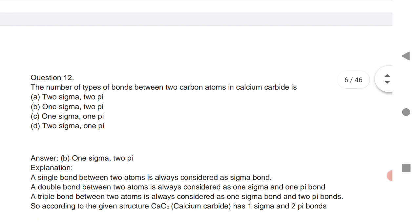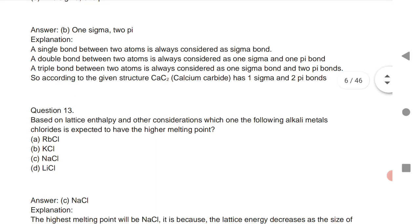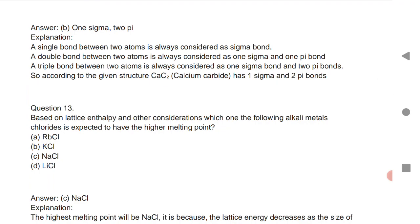The number of types of bonds between two carbon atoms in calcium carbide is one sigma bond and two pi bonds. A single bond is one sigma bond; a double bond has one sigma bond and one pi bond; a triple bond has one sigma bond and two pi bonds.